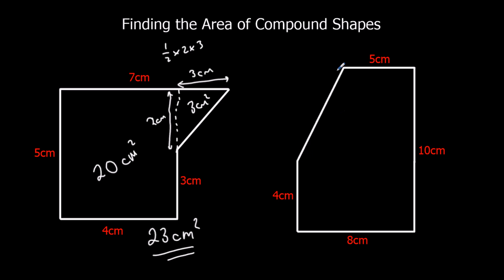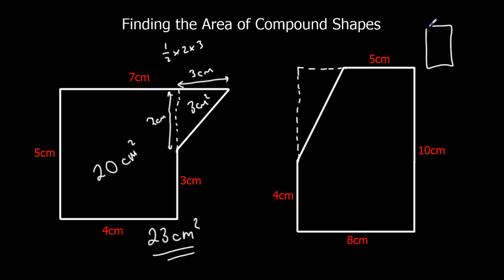Here we've got a few options — we could do a trapezium and a rectangle, or two rectangles and a triangle, or a big rectangle take away a triangle, which is probably the easiest. So the whole big rectangle is 8 times 10, which is 80 centimeters squared.